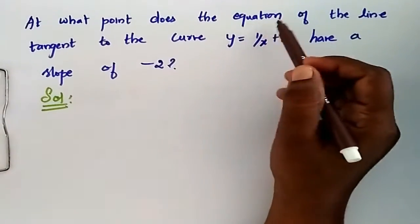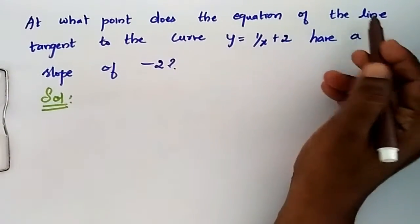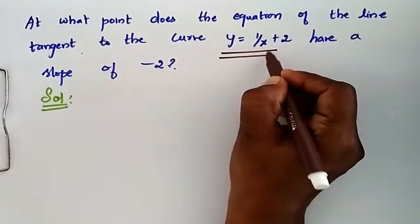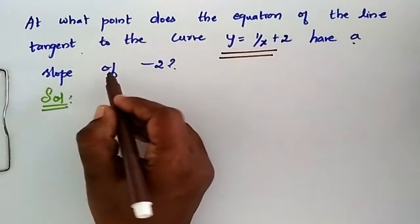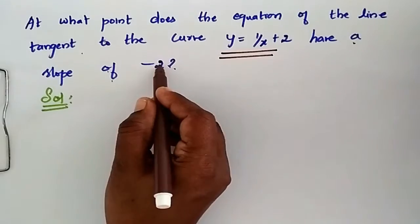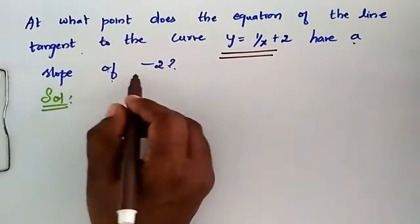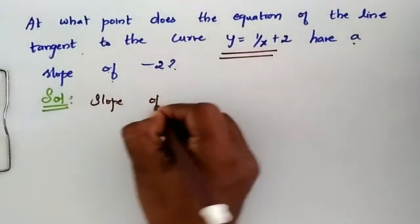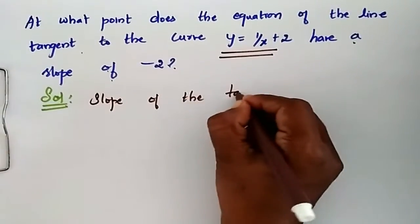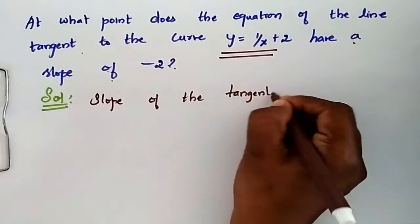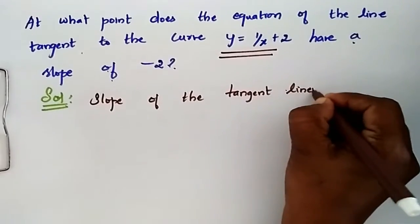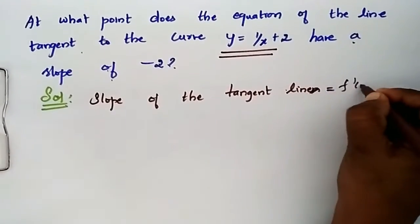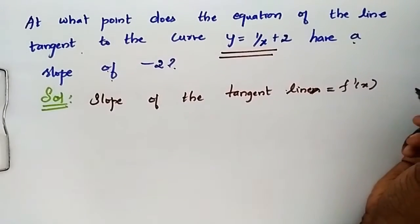At what point does the equation of the line tangent to the curve y = 1/x + 2 have a slope of minus 2? The slope of the tangent line is equal to f'(x).